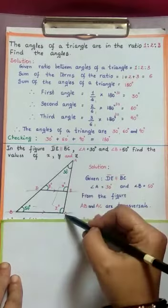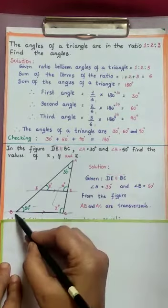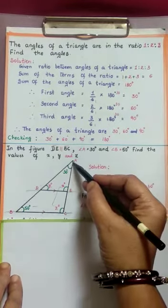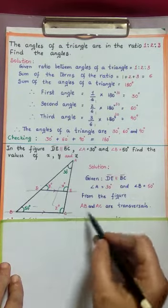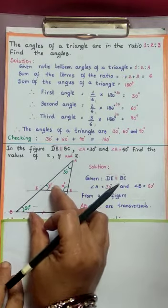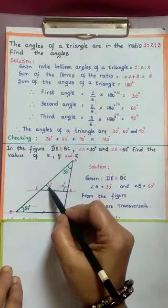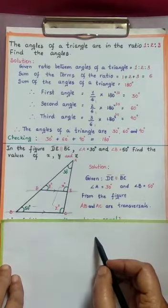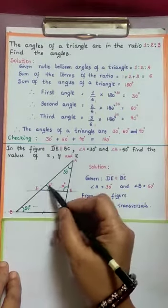What about AB and AC? By extending these lines, AB meets DE and BC at two distinct points — point D and point B. AC intersects at point E and point C. So AB and AC are transversals. When AB and AC are transversals across two parallel lines, Y is exterior and 50 is interior — one exterior and one interior angle on the same side of the transversal are called corresponding angles. Since corresponding angles made by the transversal are equal, 50 and Y are equal.